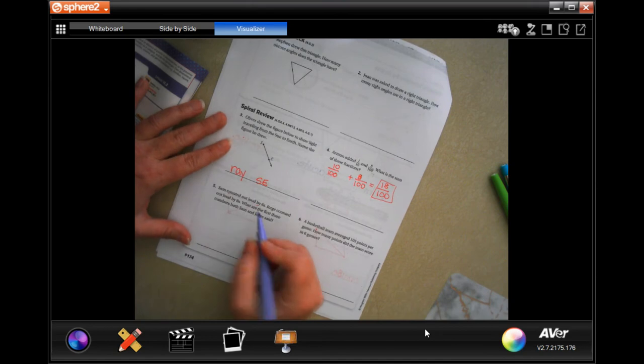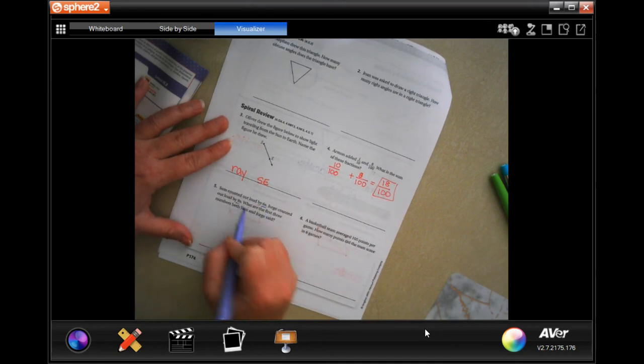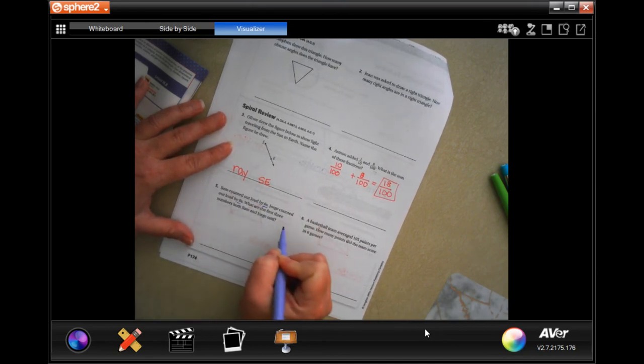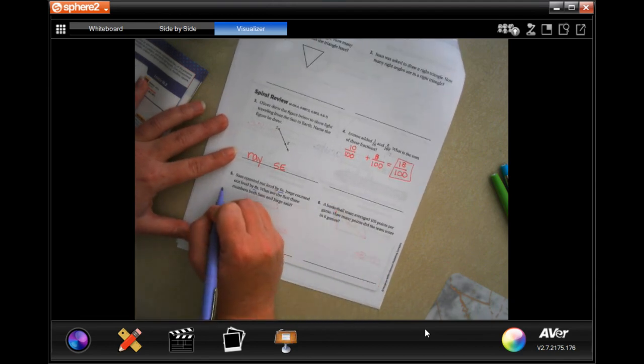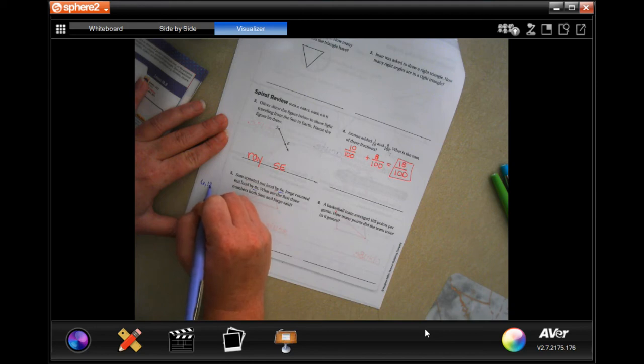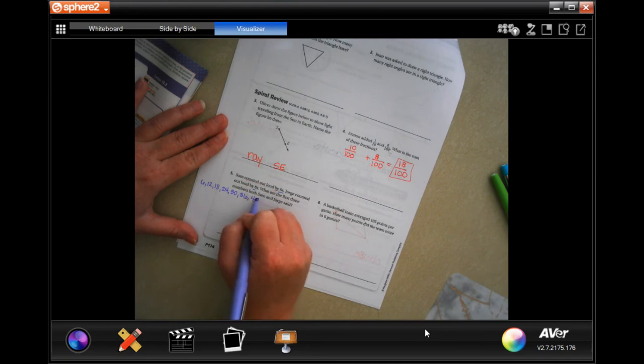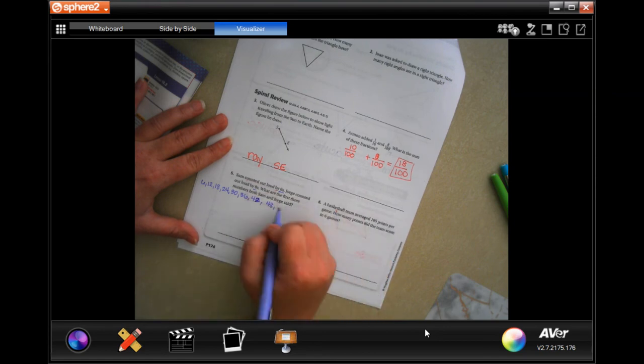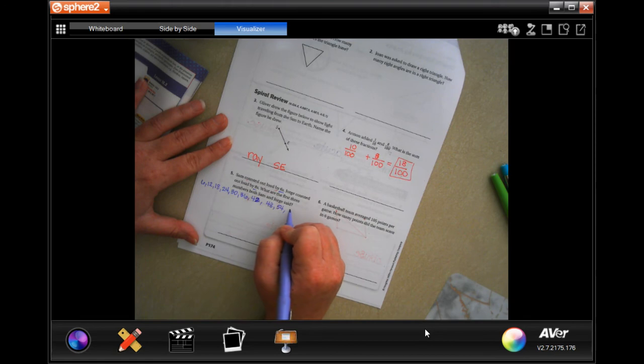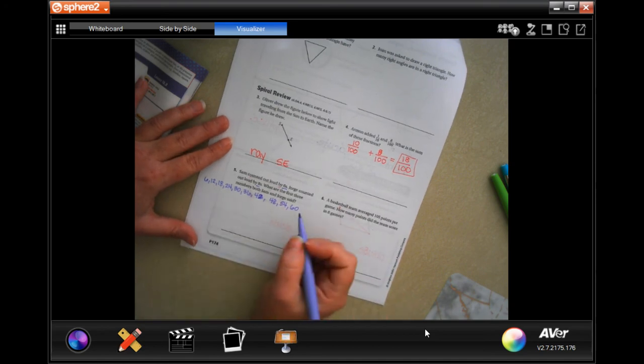Sam counted out loud by sixes, Jorge counted by eights, what's the first three numbers both said? Let's start over here and we're gonna go 6, 12, 18, 24, 30, 36, 42, 48, 54, 60. So let's stop there for now. And now we're gonna go by 8: 8, 16, 24.